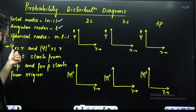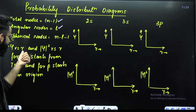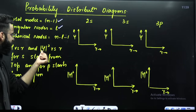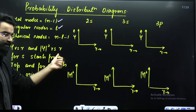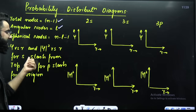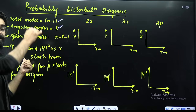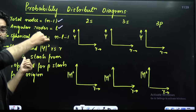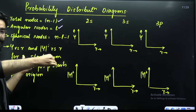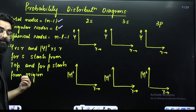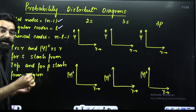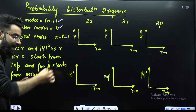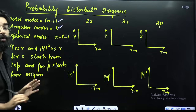For psi versus R as well as psi² versus R — for all the S orbitals they start from the top and then go down. Similarly, for the P orbitals they start from the origin and then they go up.